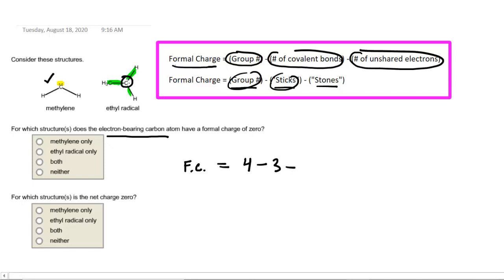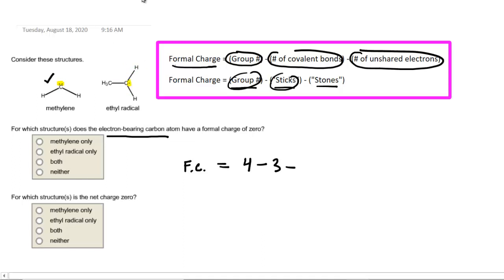and then subtract the number of unshared electrons. If we look carefully, we can see there is just 1 unshared electron on that carbon, so we'll put 1 there. We perform this calculation and we would also get a formal charge equal to 0. Therefore, when they ask which of the electron-bearing carbon atoms has a formal charge of 0, the correct answer is that both of them do.